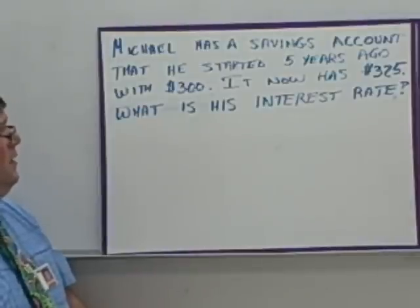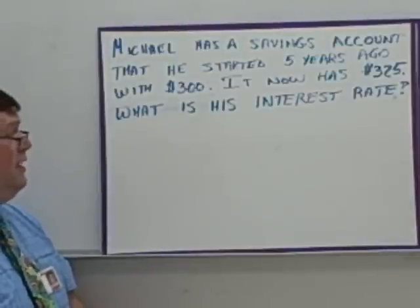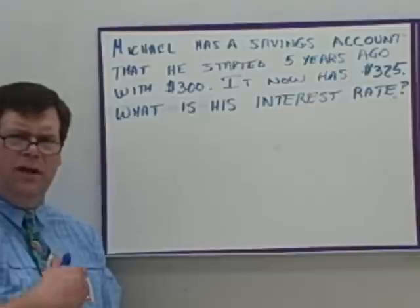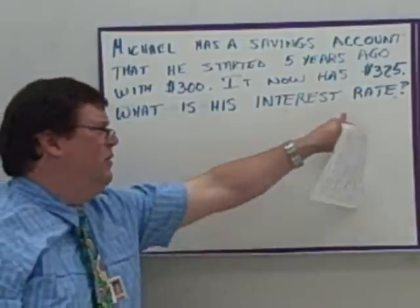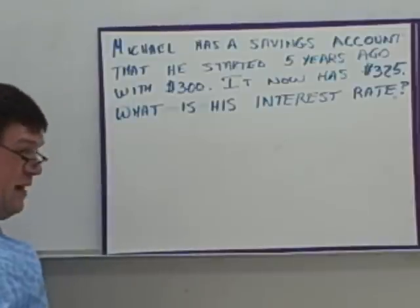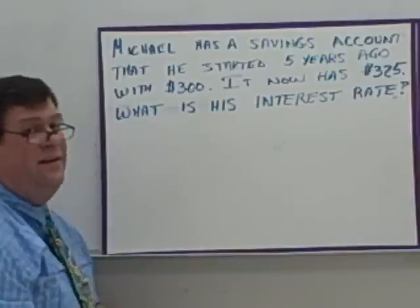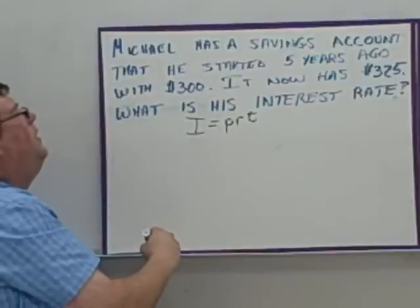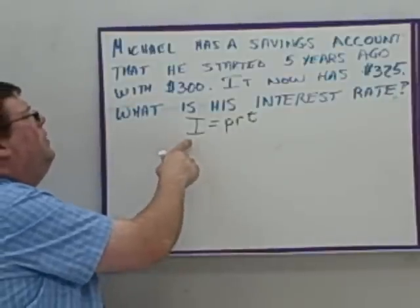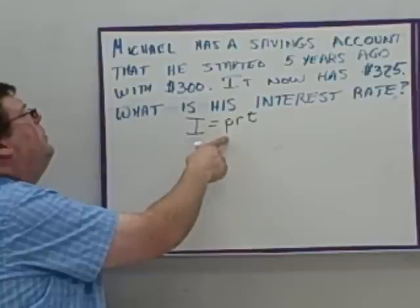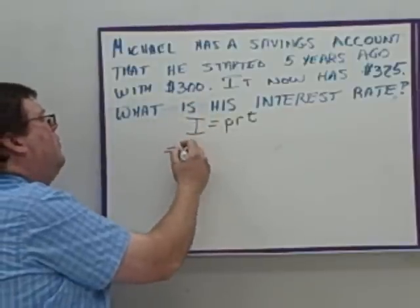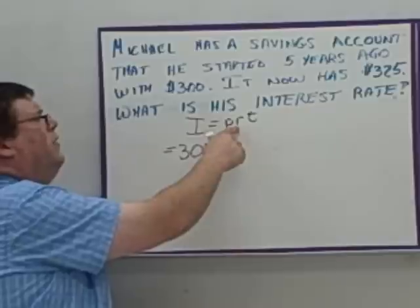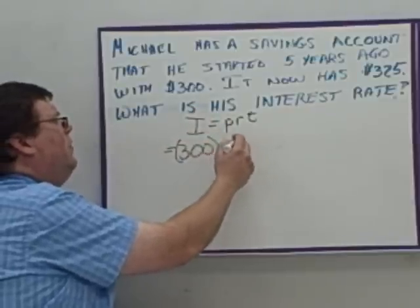Michael has a savings account that he started five years ago with $300. It now has $325. What is his interest rate? All the other questions were asking for the interest — this time they're asking for the interest rate. But we're still using the same formula, I equals PRT. Fill in what you know. I don't see the interest directly — I see the principal, $300. We're looking for the rate, so it stays as R. There's no percent given, so R is our unknown.